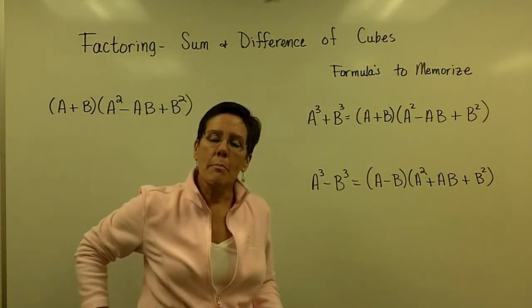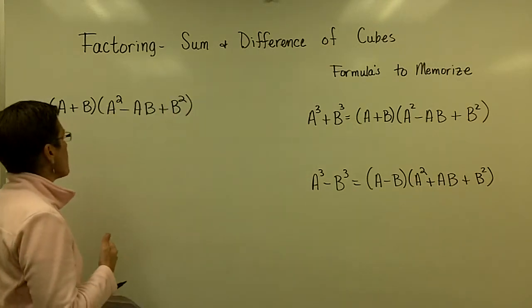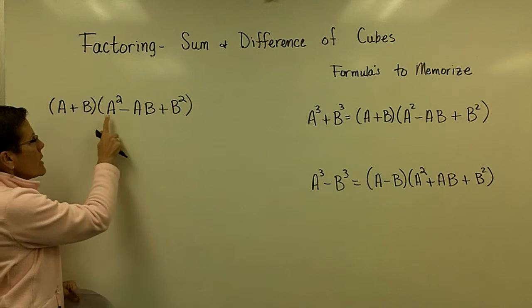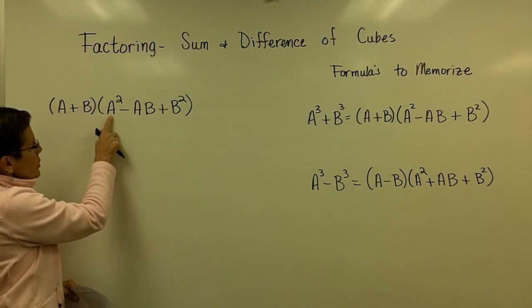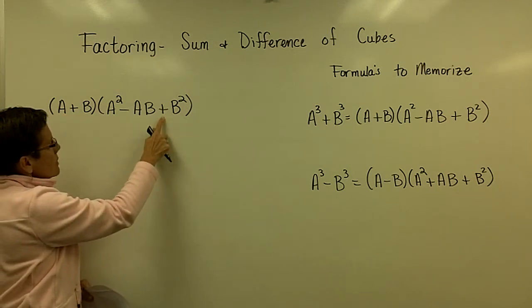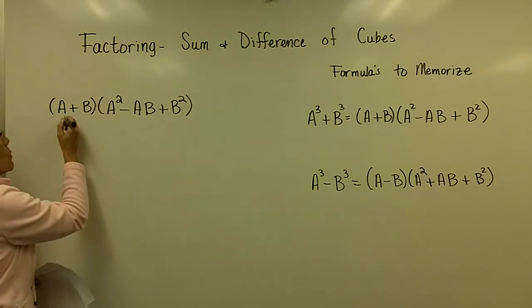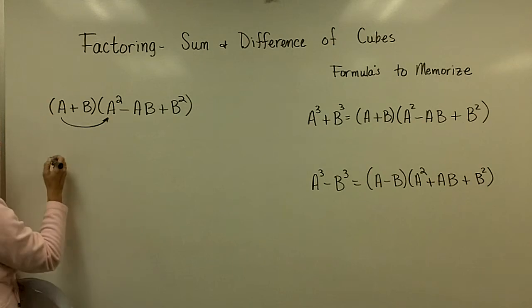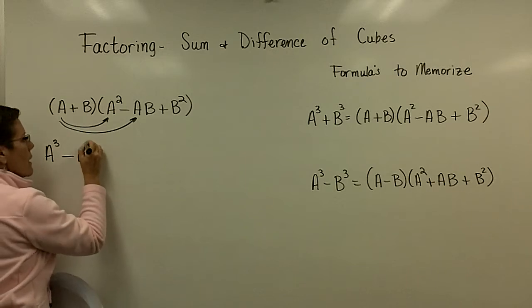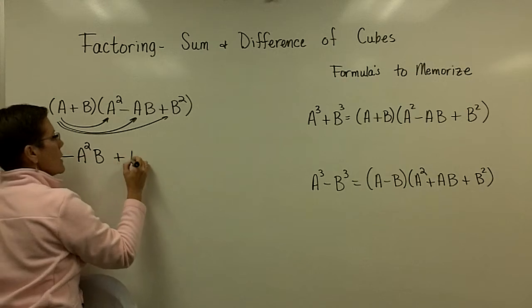These two formulas need to be memorized if you're going to be able to factor a sum or difference of cubes. Mathematicians saw this binomial — (a + b) — times this first term squared, minus those two values' product, plus this last term squared. They found that when they multiplied by distributing, a times a squared is a cubed, and a times negative ab is negative a squared b, and then a times b squared is ab squared.